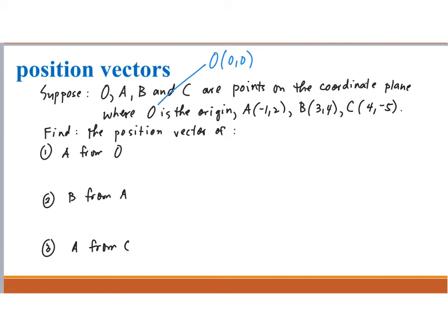Find the position vector of A from O. We start from O with coordinates (0, 0) to A with coordinates (-1, 2). The vector we are looking for is OA. The X component is -1 minus 0, and the Y component is 2 minus 0. So the vector OA is (-1, 2).